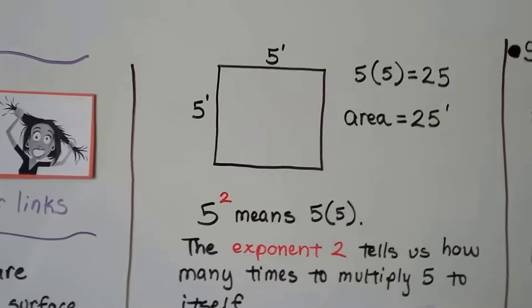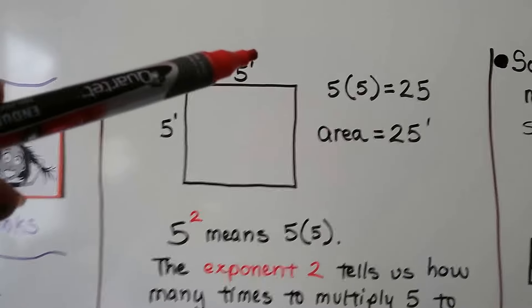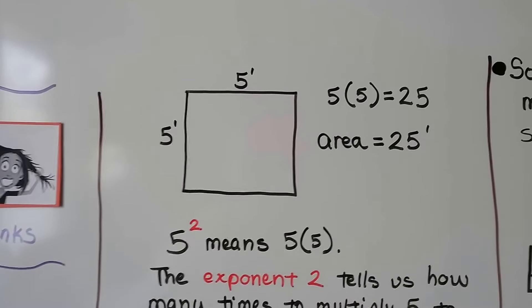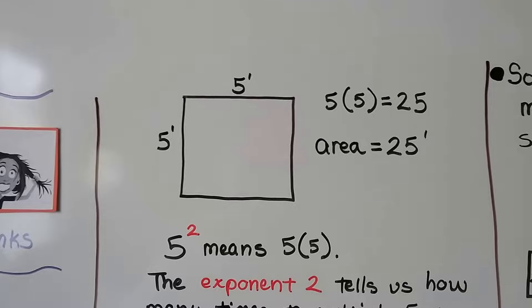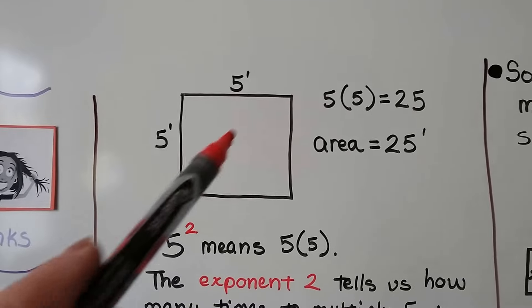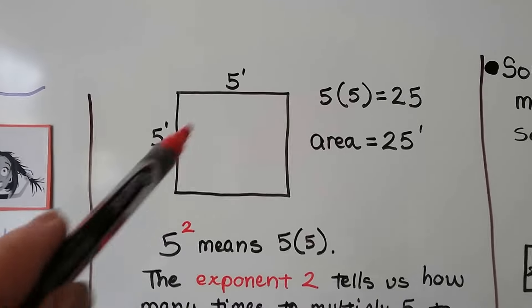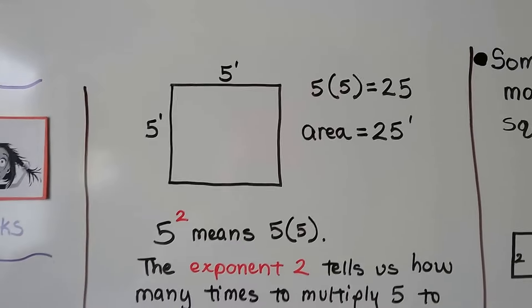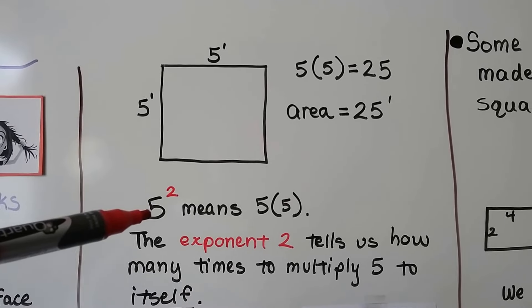Here we've got this side is 5 feet, that side is 5 feet, so the area is 5 times 5 — it's 25. There would be 25 squares inside of here — 25 one-foot squares. And this means 5 squared.